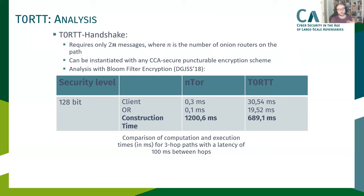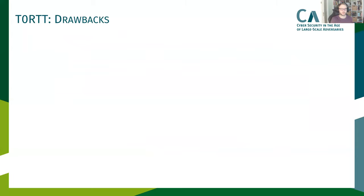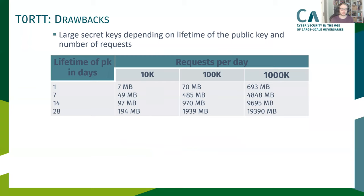But our approach has also a few drawbacks, and we think all these drawbacks are manageable. First of all, current puncturable encryption schemes suffer from large secret keys. This is due to the puncturing property and is unavoidable. For a lifetime of 28 days for a public key and 1 million requests per day for the Onion Router, the Onion Router has to store a secret key of 20 gigabytes in size, so Onion Routers need bigger storage.